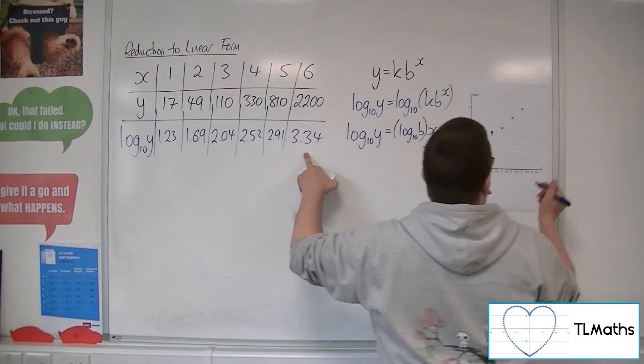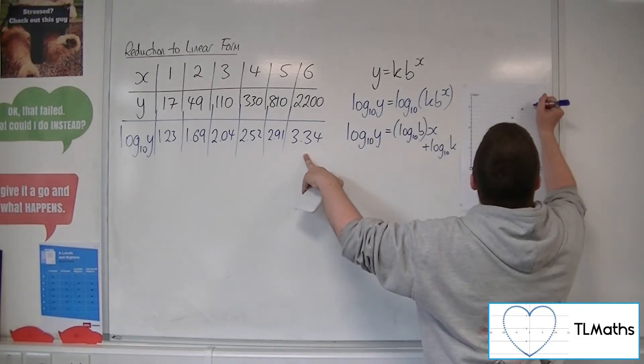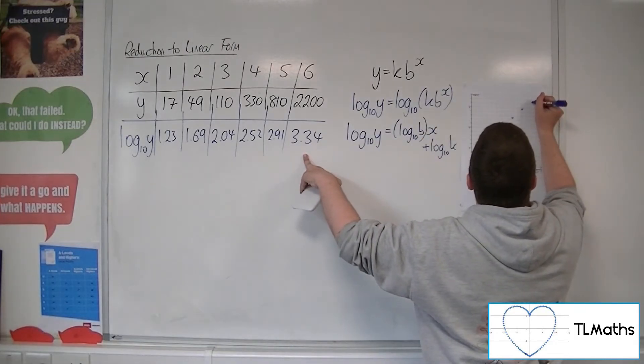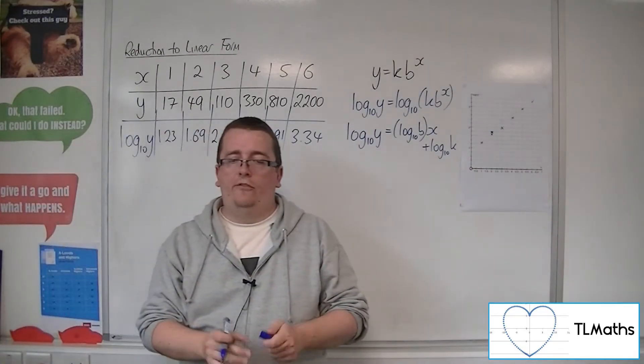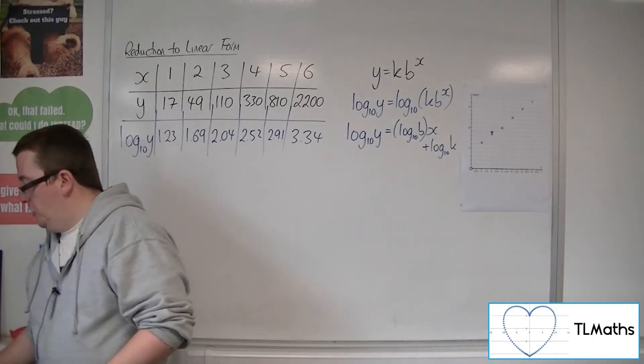6, 3.34. 3.2, 3.3, a little bit there. So what you can see is that the data is roughly in a straight line, which is good.